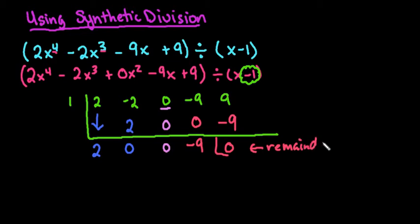That tells me that this value right here is a factor. So if you end up with a 0 as the remainder, that tells you that this is a factor of the other polynomial. So x minus 1 is a factor of 2x to the 4th minus 2x cubed minus 9x plus 9.